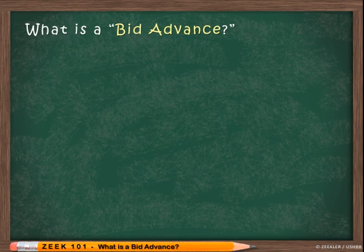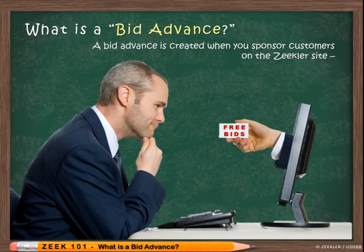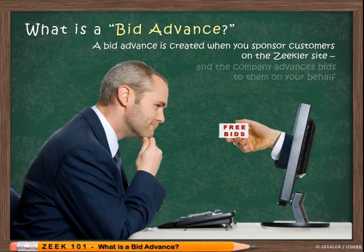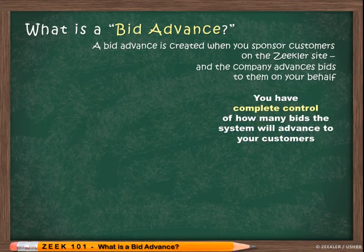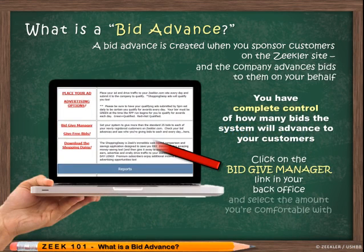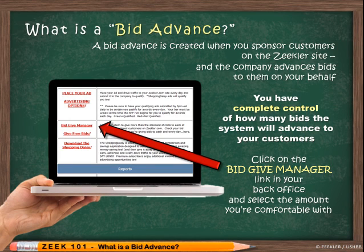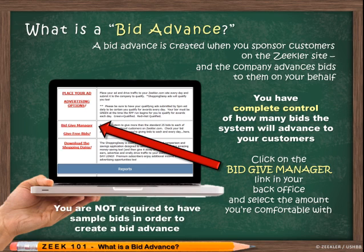A bid advance is created when you sponsor customers on the Zeekler site and the company advances bids to them on your behalf. You have complete control over how many bids the system will advance to your customers — simply click on the Bid Give Manager link in your back office and select the amount of bids you're comfortable with. For the record, you're not required to have sample bids in order to create a bid advance.